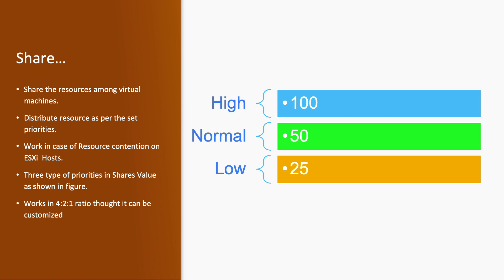Share value comes into the picture only if there is resource contention on the cluster. If a virtual machine is configured with a high share value, it will take priority over other virtual machines. The distribution of resources will be as per the priorities, which are set in terms of 100, 50, and 25 — configured for high, normal, and low respectively.